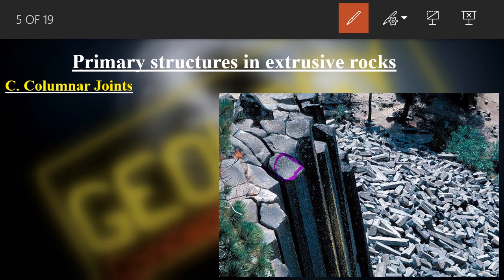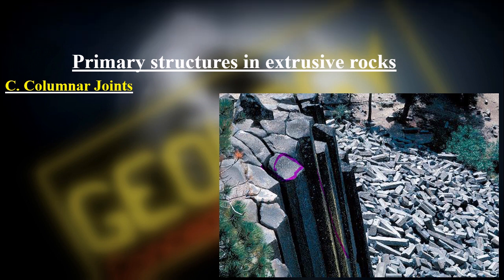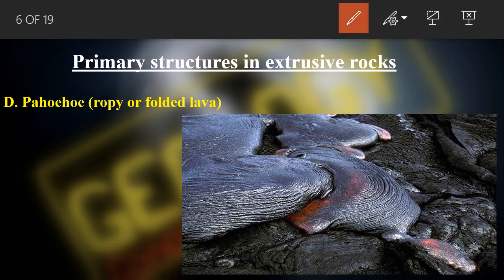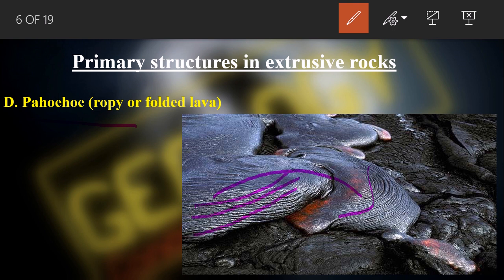Columnar joints form when igneous rock comes out from a restricted zone, cools, and contracts to form these columns. Next we have pahoehoe — these names come from the Hawaii region, a hot spot with continuous lava flow. Pahoehoe is the ropy or folded lava; it is very low viscosity and flows easily, forming a rope-like structure on the outer surface, which is why it's called ropy lava.